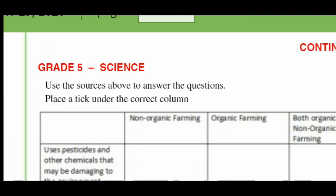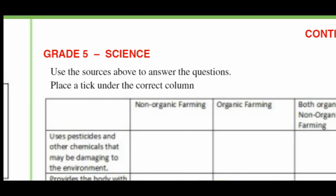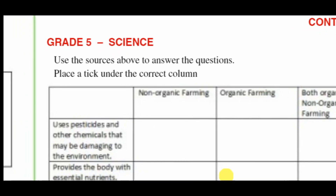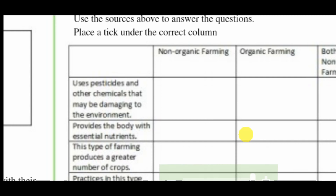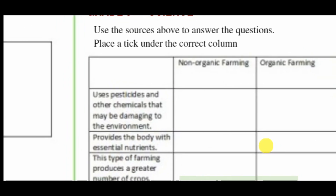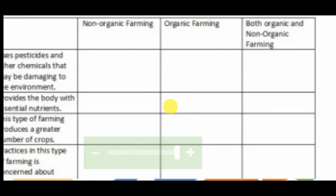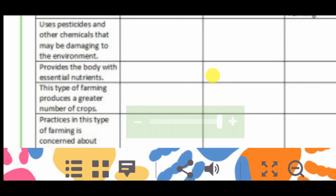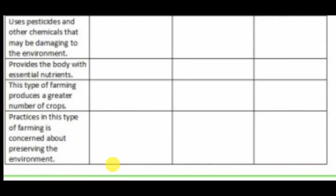Now we are supposed to complete a table using the sources above to answer the questions. Place a tick under the correct column — non-organic, organic, or both. 'Uses pesticides and other chemicals that may be damaging to the environment' — that fits non-organic only. 'Provides the body with essential nutrients' — that would be both organic and non-organic. 'This type of farming produces a greater number of crops' — that is non-organic. 'Practices concerned about the environment' — that would be organic.